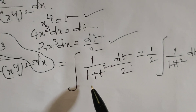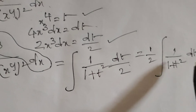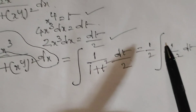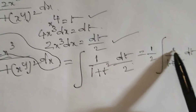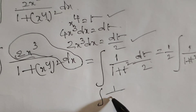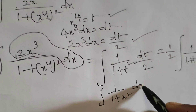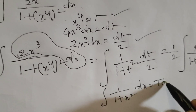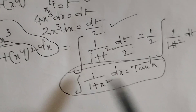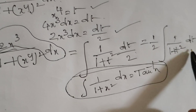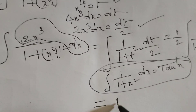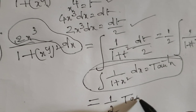Next, we apply the known formula: the integral of 1 over 1 plus x squared dx equals tan inverse x. So, our integral of 1 over 1 plus t squared dt gives us one half times tan inverse t.